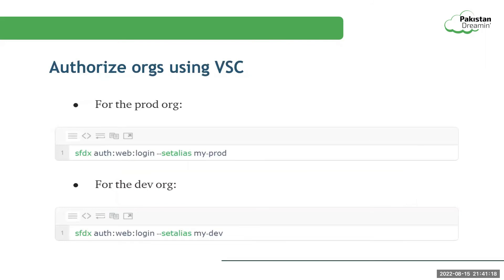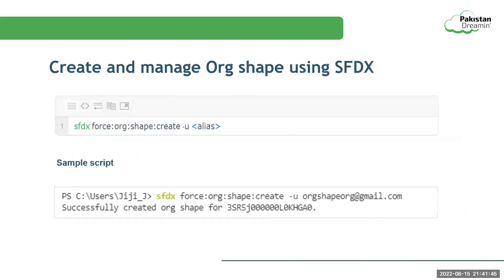Let's check how we create org shape and use it for scratch org creation using Visual Studio Code. As a prerequisite, we need to authorize our Dev Hub org and the source org. We run a simple command like: sfdx auth:web:login --setalias myProd or myDev. This will take us to the Salesforce login page where we enter our org's username and password and allow CLI to access the org. A success message will be displayed once the org is authorized. Once authorized, we can create the org shape by running: sfdx force:org:shape:create -u <username for the org>.